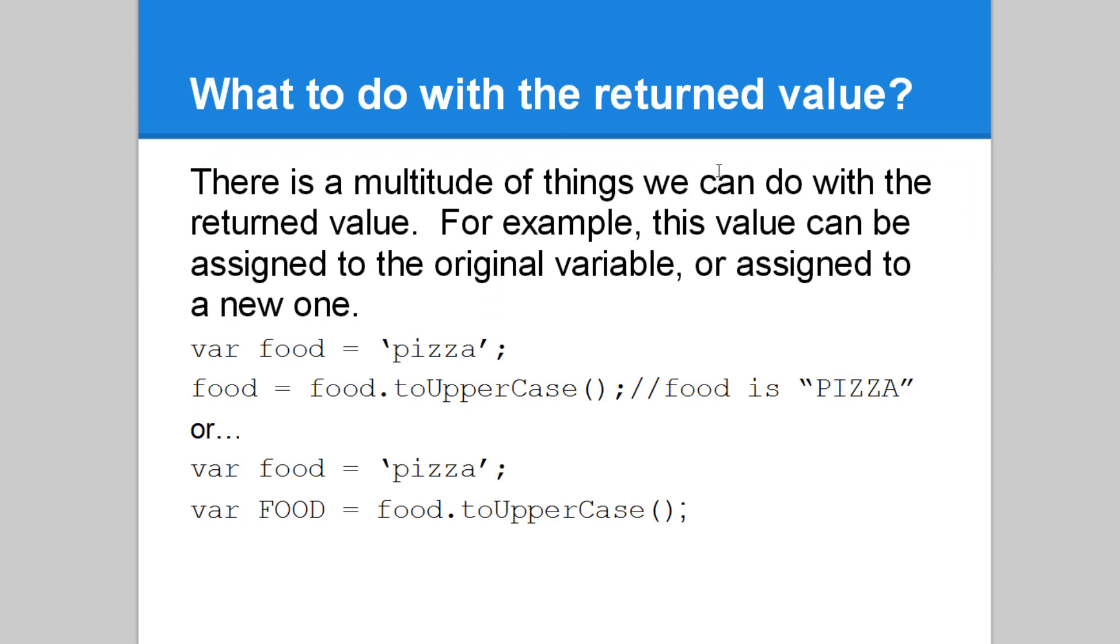So what do we do with the returned value? There's a multitude of things we can do with the returned value. For example, this value can be assigned to the original variable or assigned to a new one. Now we're overriding the original value and replacing it with food to uppercase. Or we can take this value and assign it to a new variable, such as food in all capital letters. Both of these are essentially two things we can do with the return value.